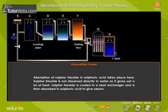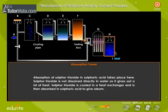In the absorption tower, absorption of sulfur trioxide in sulfuric acid takes place. Sulfur trioxide is not dissolved directly in water as it gives out a lot of heat. Sulfur trioxide is cooled in a heat exchanger and is then absorbed in sulfuric acid to give oleum.